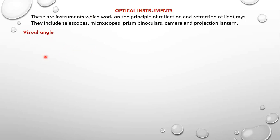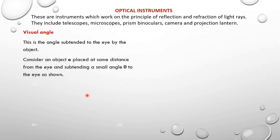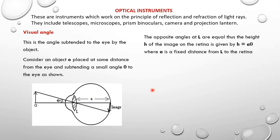Let's define the term visual angle. Visual angle is the angle subtended at the eye by the object. Consider an object at a certain distance subtending a small angle theta to the unaided eye. Since theta is a small angle in radians, theta is approximately equal to tan of theta, which is opposite over adjacent, giving h = a·theta.